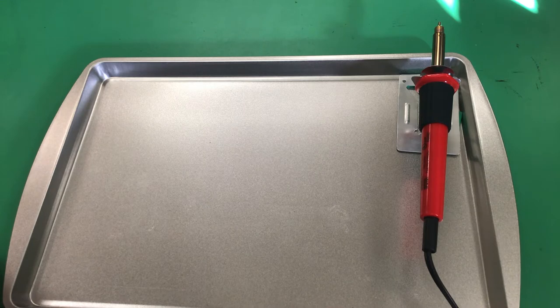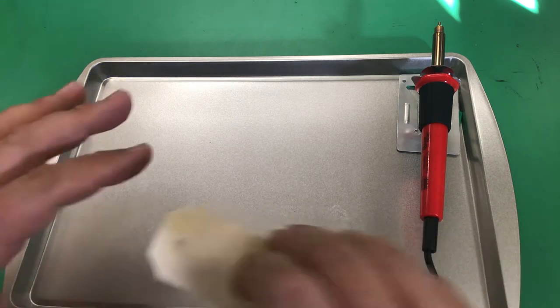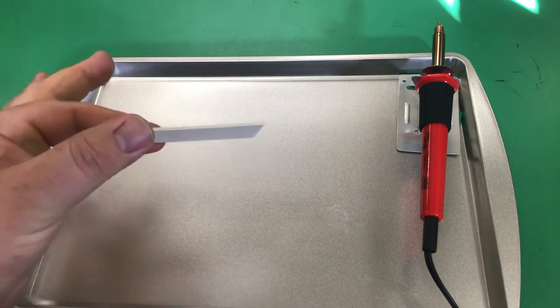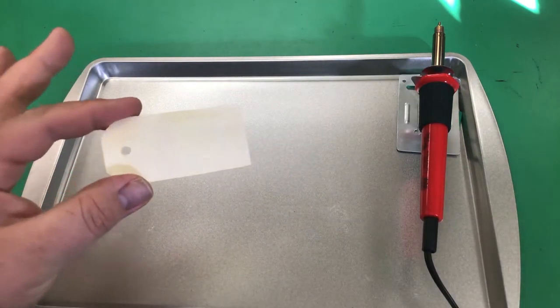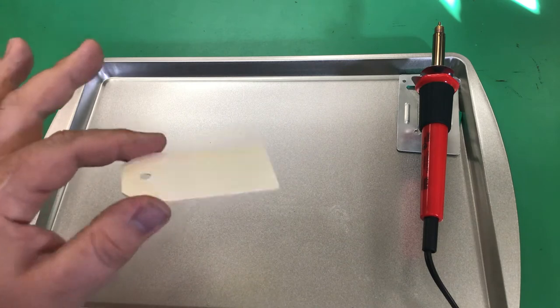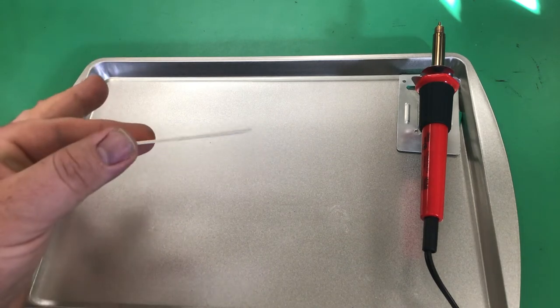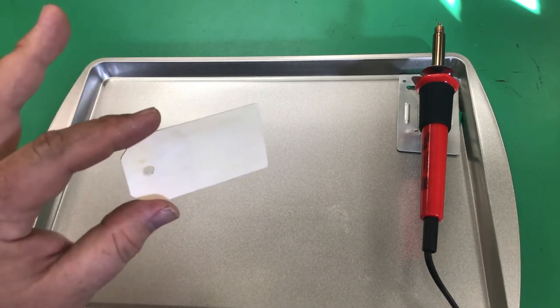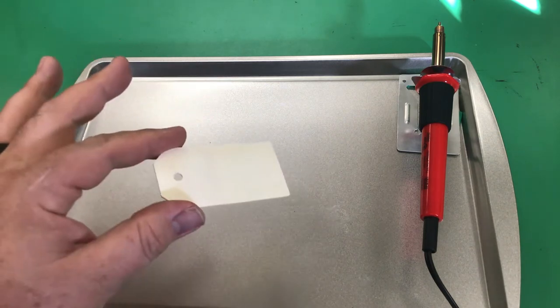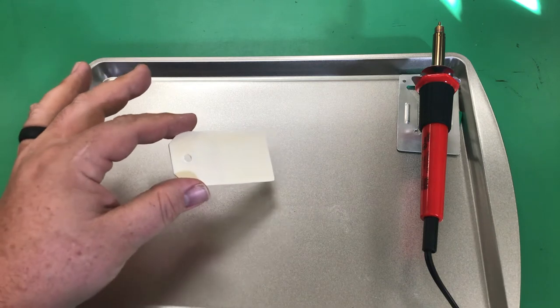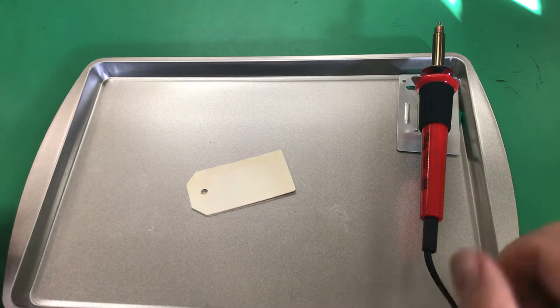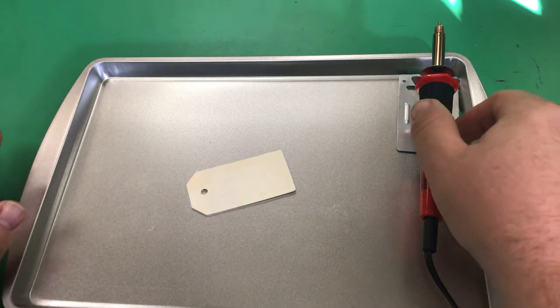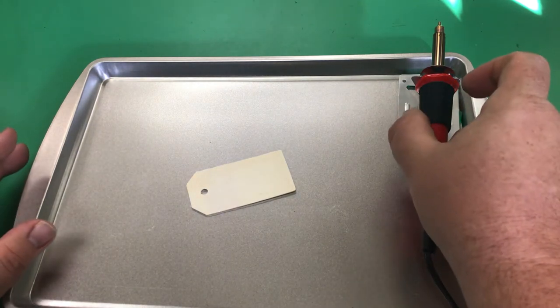Dollar General does have a lot of wood pieces that you can get to practice on. I picked up these little wood tags. It comes in a package of them and I thought it would be really good to test out because it wasn't that expensive. If I mess up, it's not a big loss. Dollar Tree also carries a lot of wood pieces. So you have a plethora of places and items to purchase to use your wood burning tool with.